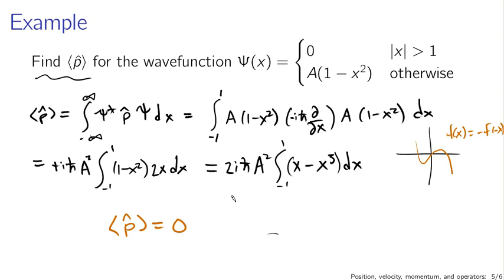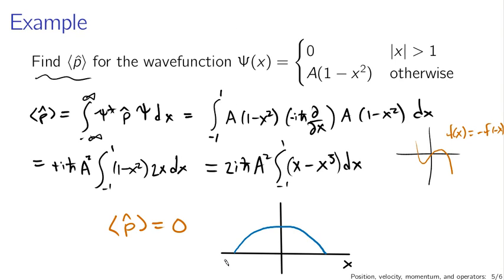This makes sense because the wave function is symmetric. If you plot psi, it goes from minus one to one and is zero outside that range, with no preferred direction. If the expected value of momentum were non-zero, that would suggest the wave function was on average moving. But this wave function has no preferred direction — you can't tell if it's moving left or right. So it makes sense that the expected momentum is zero. This doesn't mean measuring momentum always gives zero; it just means you get zero on average.